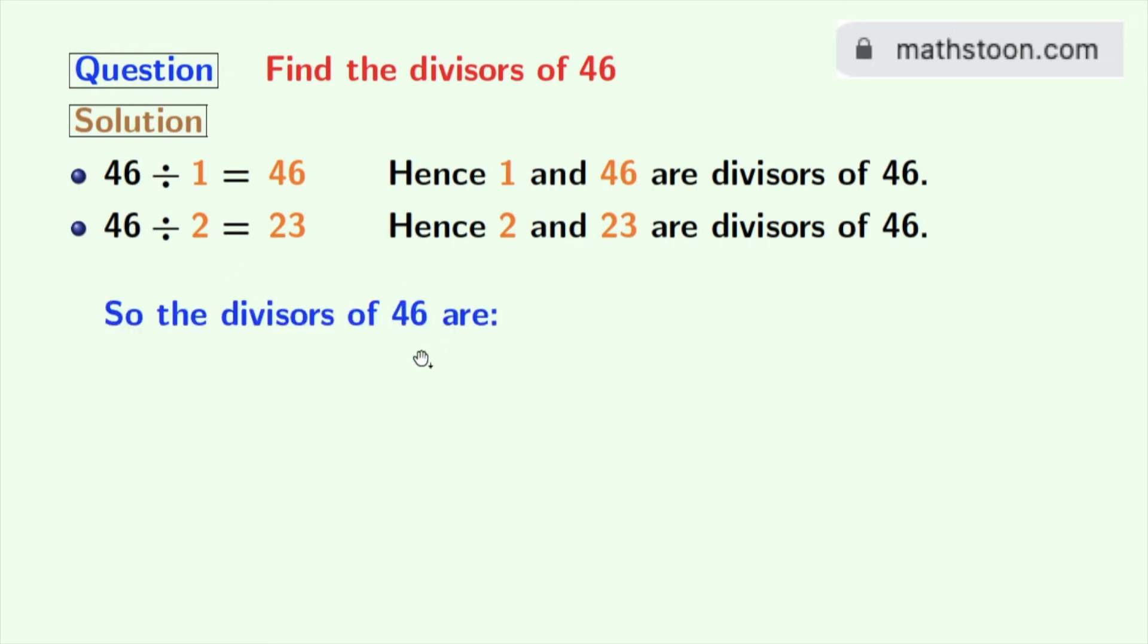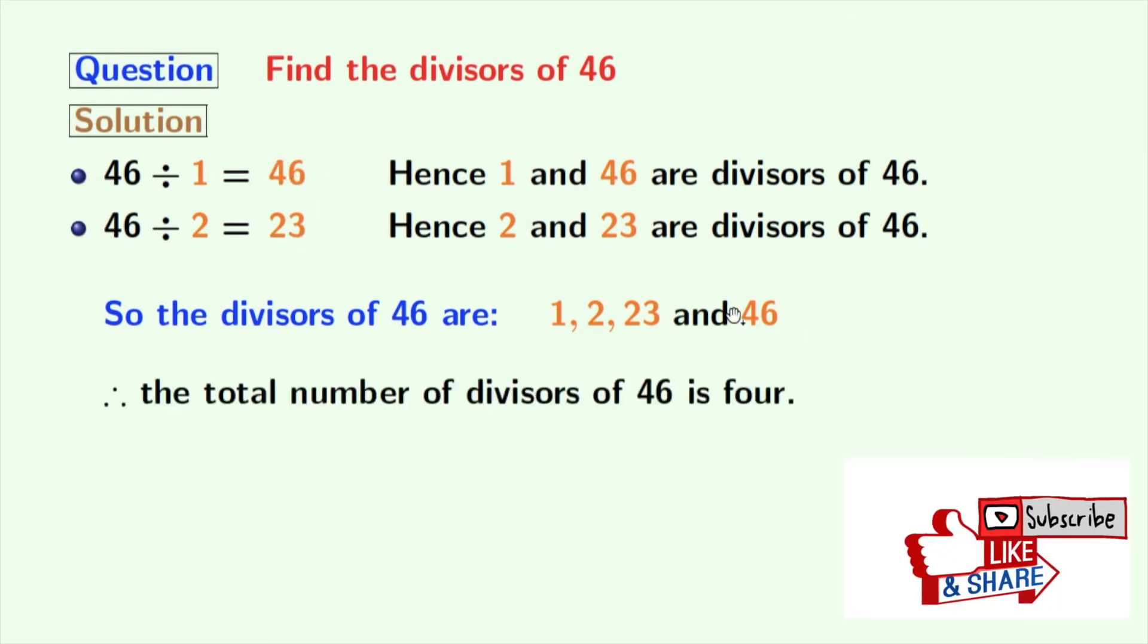Now, we have all the divisors of 46 in orange colors. These numbers are 1, 2, 23 and 46. So, the total number of divisors of 46 is 4.